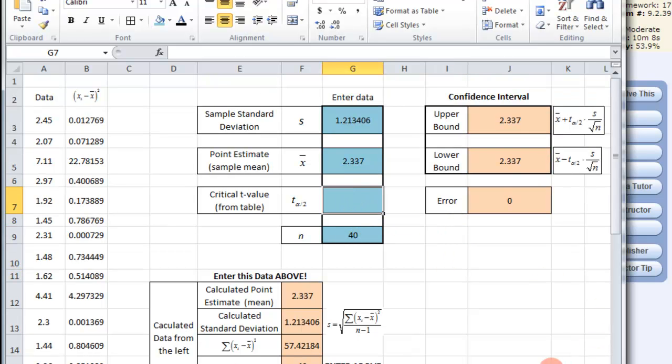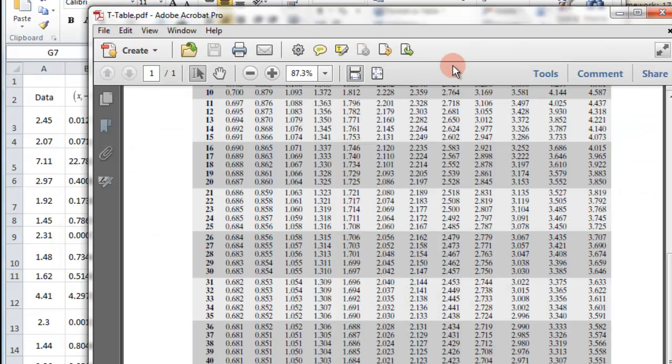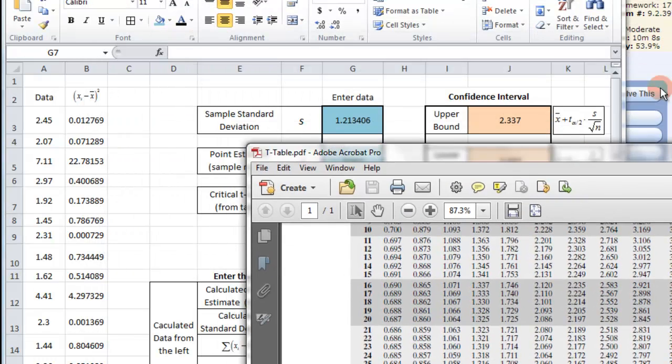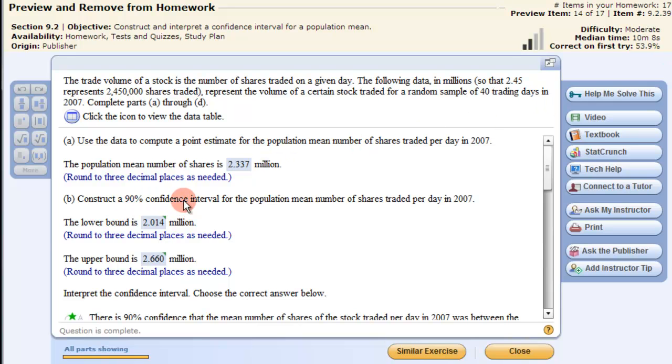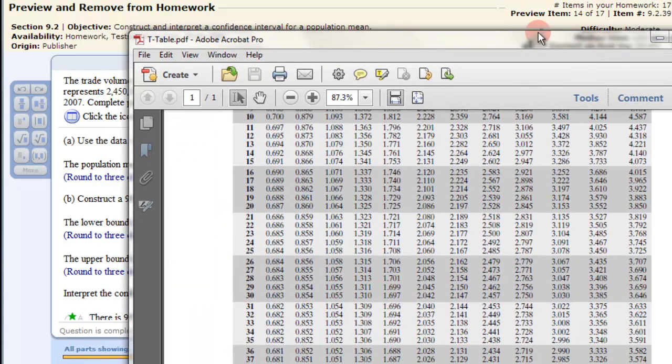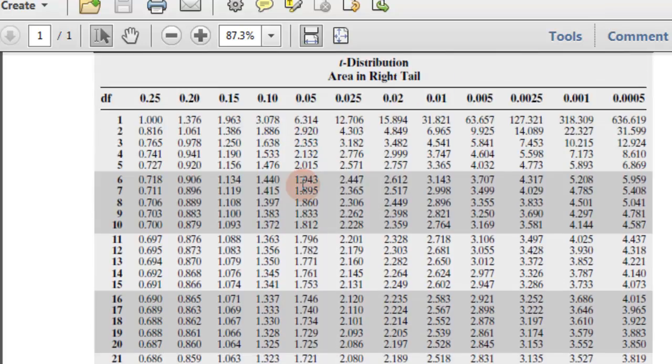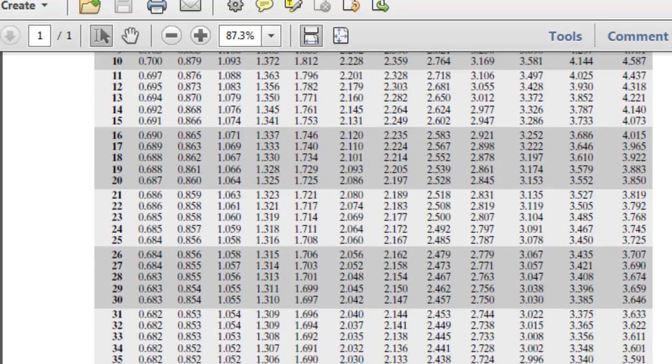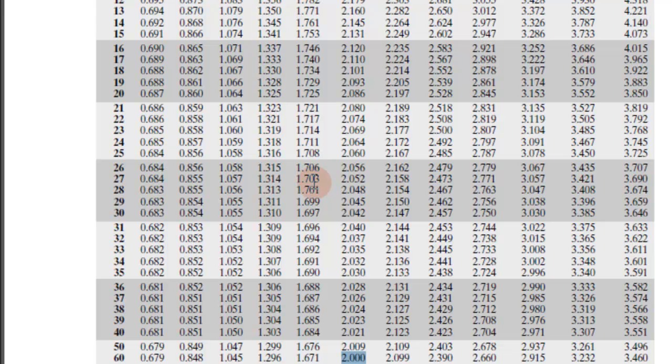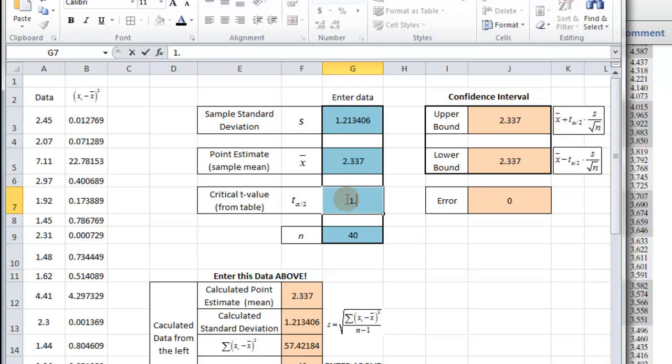Now we just have to go back up here and put them in and find the critical t value. n was 40. My standard deviation was 1.213406. Put as much information as you can. I mean 2.337. And now we need to fill this in as well. So we have n is 40, so we have 39 degrees of freedom. And we want a 90% interval. So 90% interval with 39 degrees of freedom.